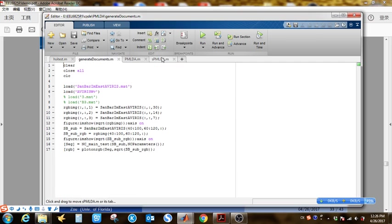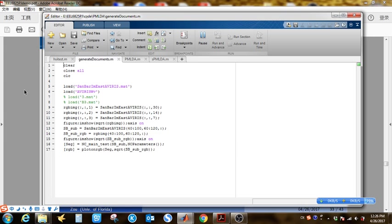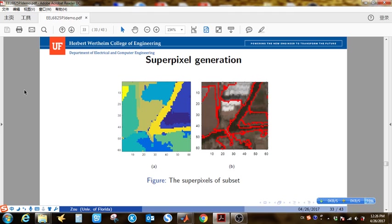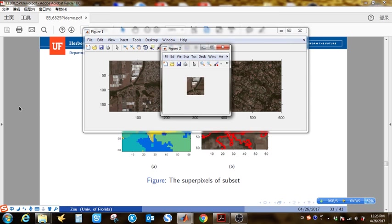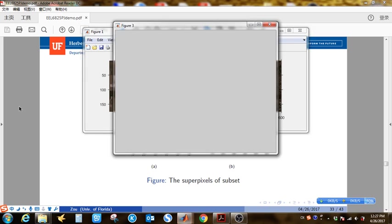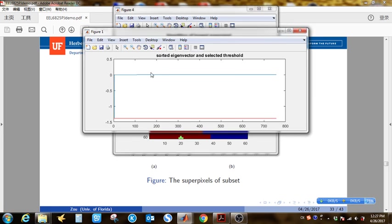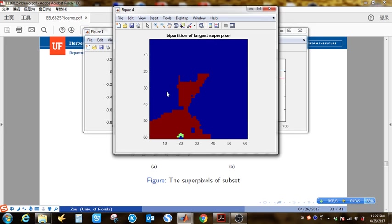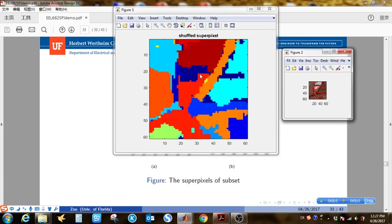So first I run normalized cut to generate the superpixels. So this is code for normalized cut. Let's run it to see. So it is doing a hierarchical normalized cut segmentation. So you can see this is the generated superpixels.